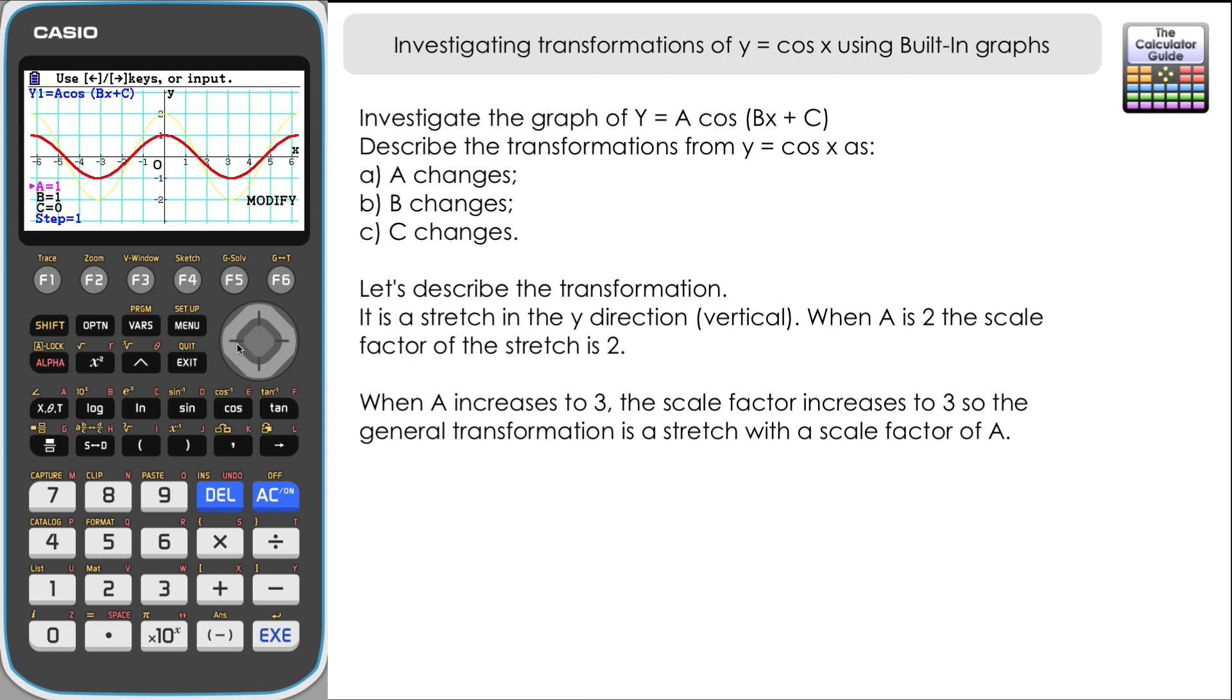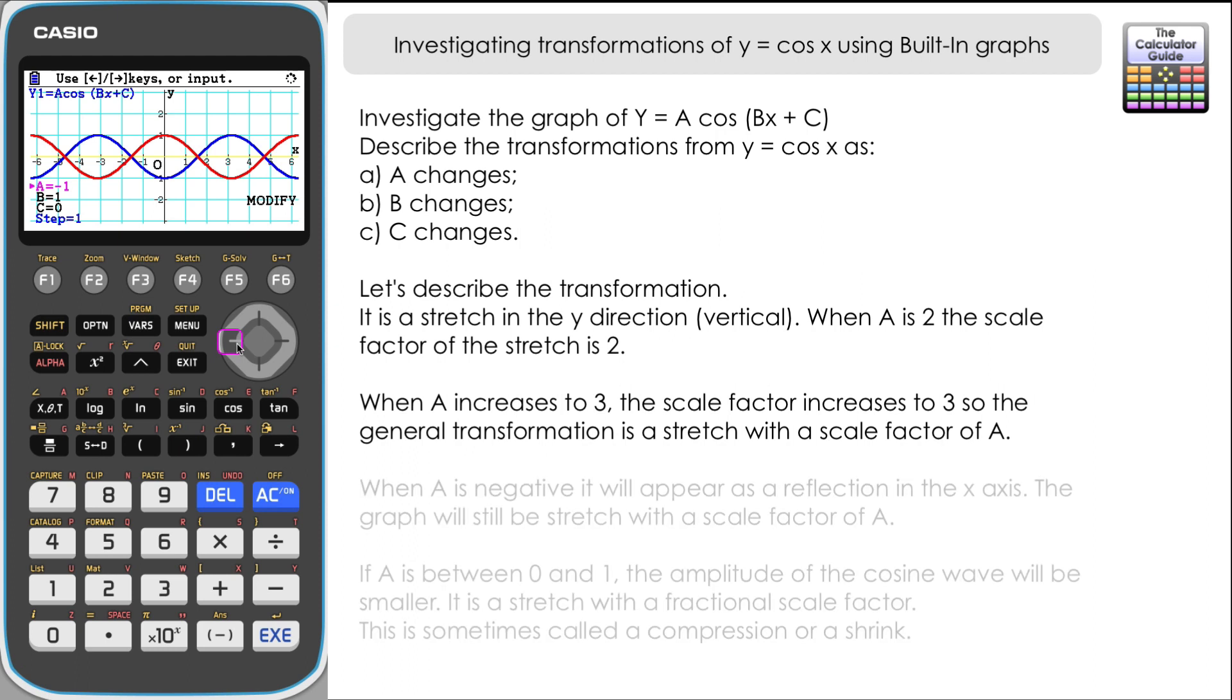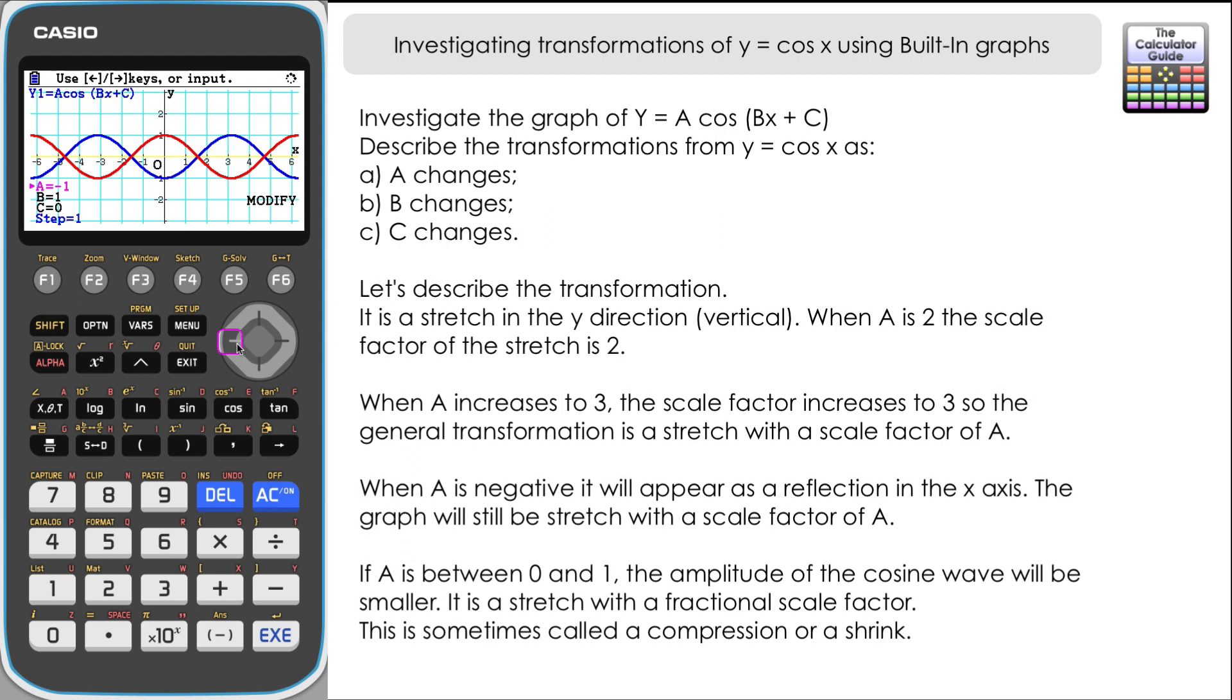Let's see what happens when we have a negative value of a. So now we have an a of negative 1. Remember the red graph is the original cosine x, and then we have a negative cosine x, minus 1 times cosine x is the blue. You can see that that is a reflection. So we have a reflection of the graph in the x-axis.